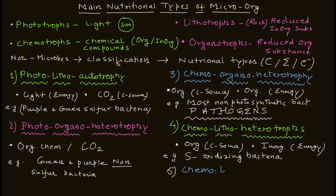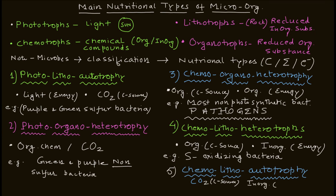Next you have chemo litho autotrophy. Here the organisms utilize CO₂ as the carbon source and inorganic chemicals or compounds as the energy source. The important examples for this category are most sulfur oxidizing bacteria and methanogens.